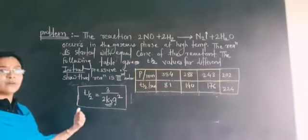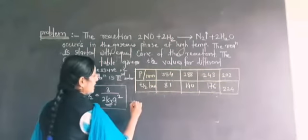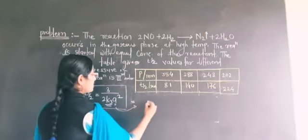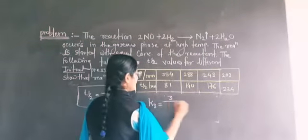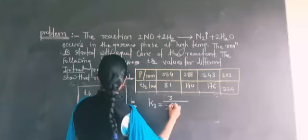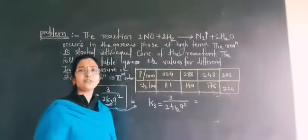By using that equation we will solve this numerical. The equation is T1/2. The half-life is given, therefore I will rearrange this equation. K3 = 3/(2T1/2 × A²). I will substitute the values that are given.